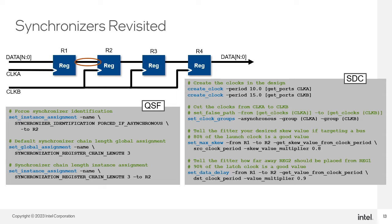Another constraint to use is set_data_delay. Since the tools can make paths between the registers in the first and second clock domains as long or short as needed, consider placing the set_data_delay constraint on those paths as an upper bound to make synchronization a known quantity. A good upper bound for set_data_delay is 90% of the latch clock. When using the destination clock period option in the set_data_delay command, use the value multiplier 0.9 to get the final delay value. Also, the data values going into the destination clock domain need to be stable for three clock edges.